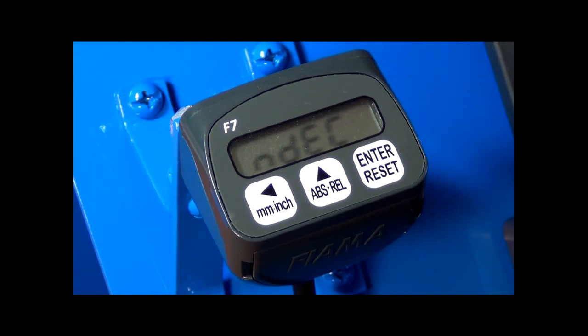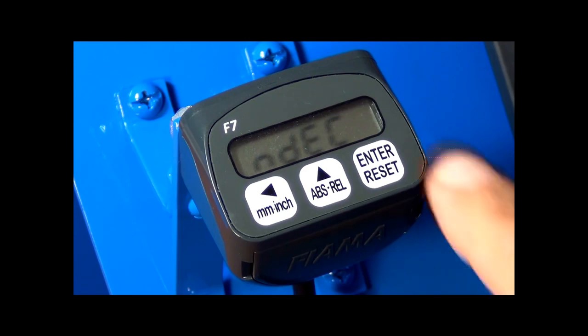NDEC is now displayed, which is the number of decimal places that the measurement display will display when in normal operating mode. In this example, we wish to display to two decimal points, so 2 will be programmed.